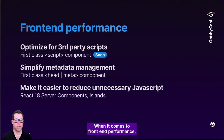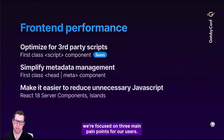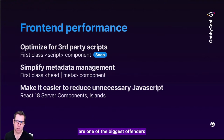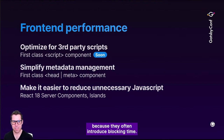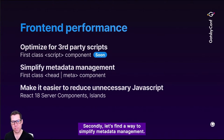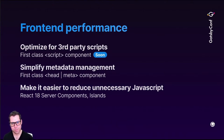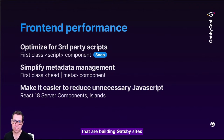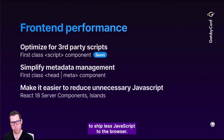When it comes to front-end performance, we're focused on three main pain points for our users. The first is optimizing for third-party scripts — we know that third-party scripts are one of the biggest offenders to site performance because they often introduce blocking time. Secondly, let's find a way to simplify metadata management. And thirdly, let's make it easier for our developers building Gatsby sites to ship less JavaScript to the browser.